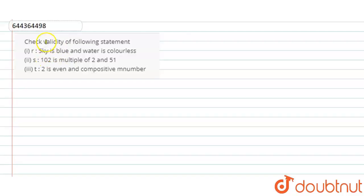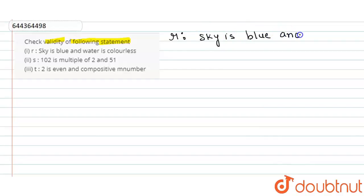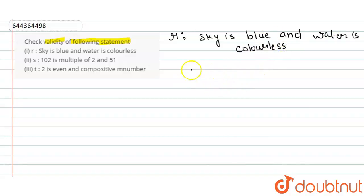Today our question is: we are given three statements and we have to check the validity of each. Let's start one by one. The first statement R is a compound statement with two components.